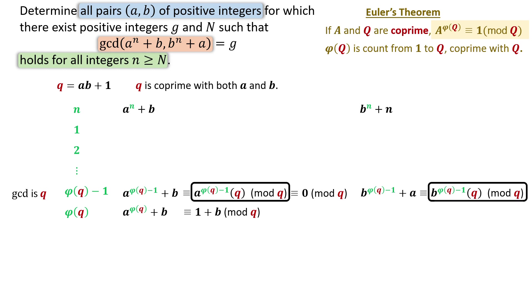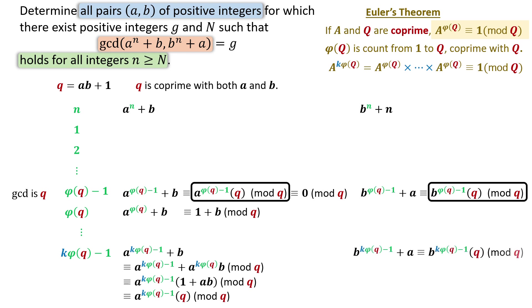By Euler's theorem, a to the phi q is 1 mod q. Multiplying any power of a to the phi q gives 1 mod q. As the value of n increases, the pattern repeats every value of phi q, meaning the gcd always contain q at some point. Since we need the gcd to eventually be constant, every term must be divisible by q, or a b plus 1.